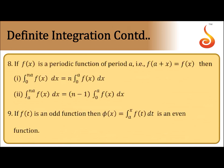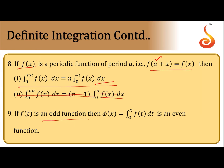For periodic functions: if f(x) is periodic with period a, then ∫₀^(na) f(x) dx = n · ∫₀ᵃ f(x) dx. Also, if f(x) is an odd function, then its integral φ(x) = ∫ₐˣ φ(t) dt is an even function — that is, whenever the integrand is an odd function, its integration yields an even function.